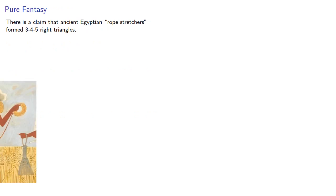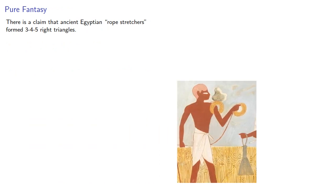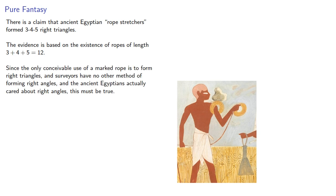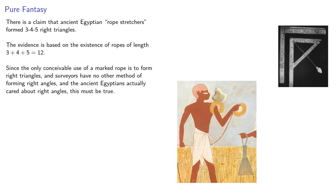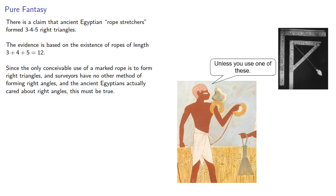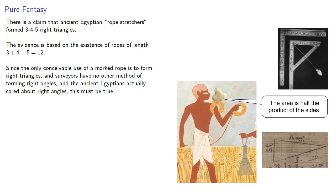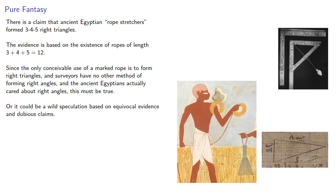There's a claim that ancient Egyptian rope stretchers formed 3-4-5 right triangles. The evidence is based on the existence of ropes of length 3 + 4 + 5 = 12. Since the only conceivable use of a marked rope is to form right triangles, and surveyors have no other method of forming right angles, and the ancient Egyptians actually cared about right angles, this must be true. Or it could be wild speculation based on equivocal evidence and dubious claims.